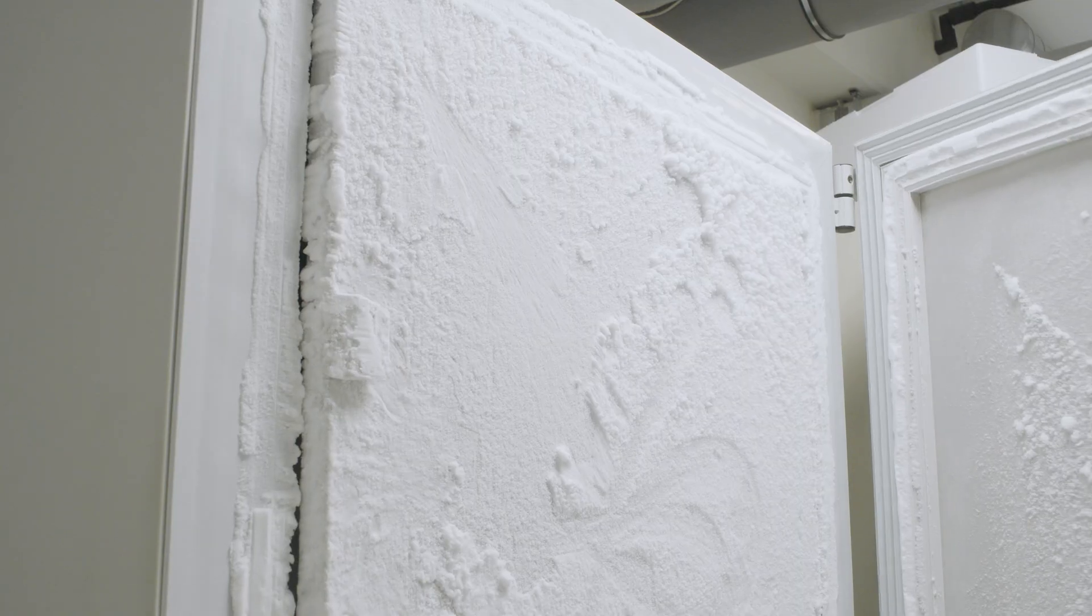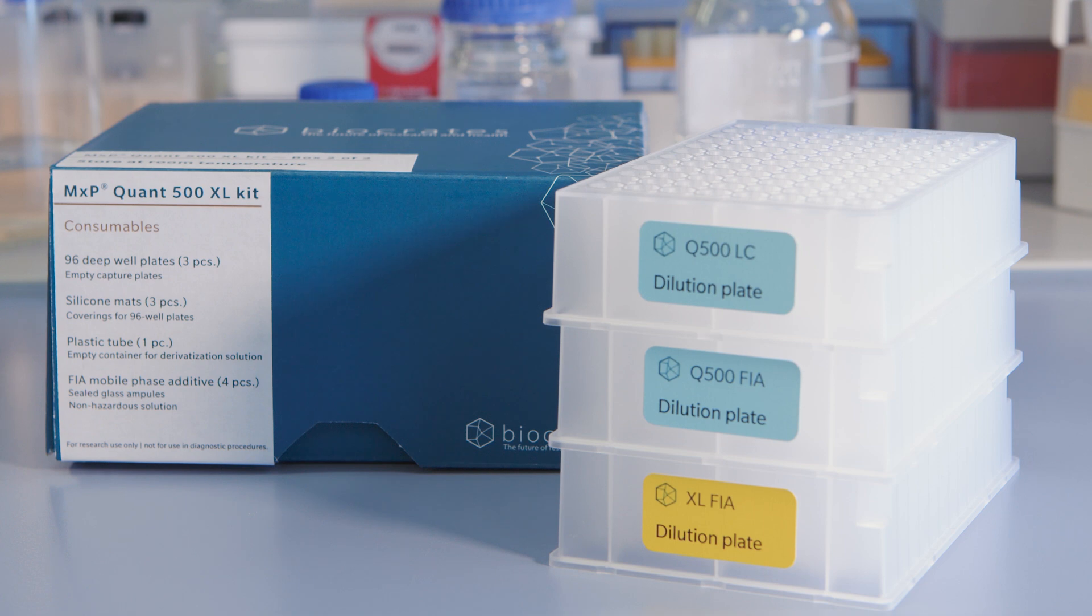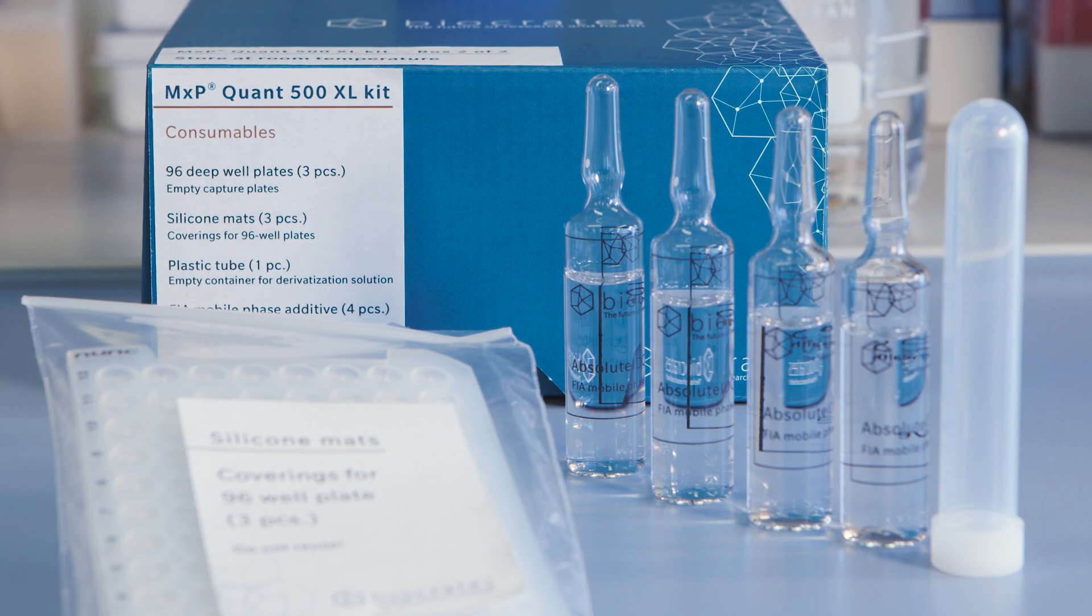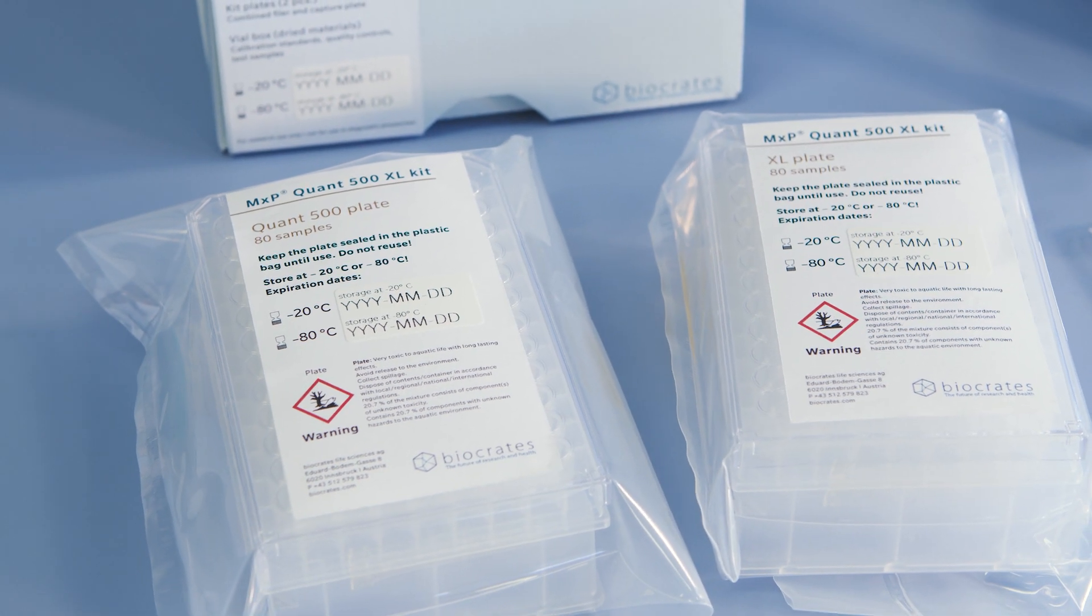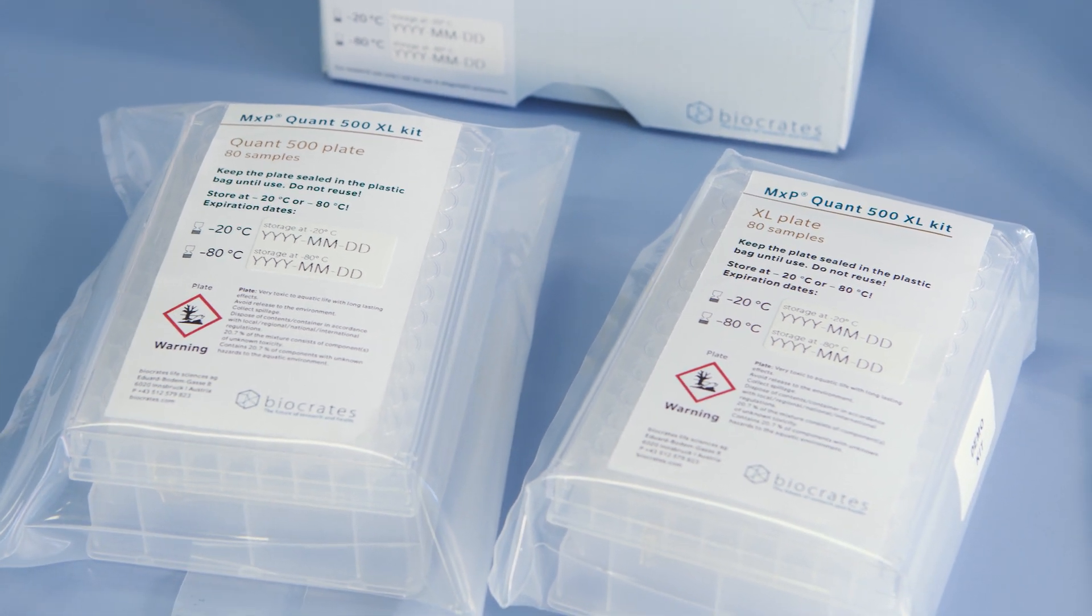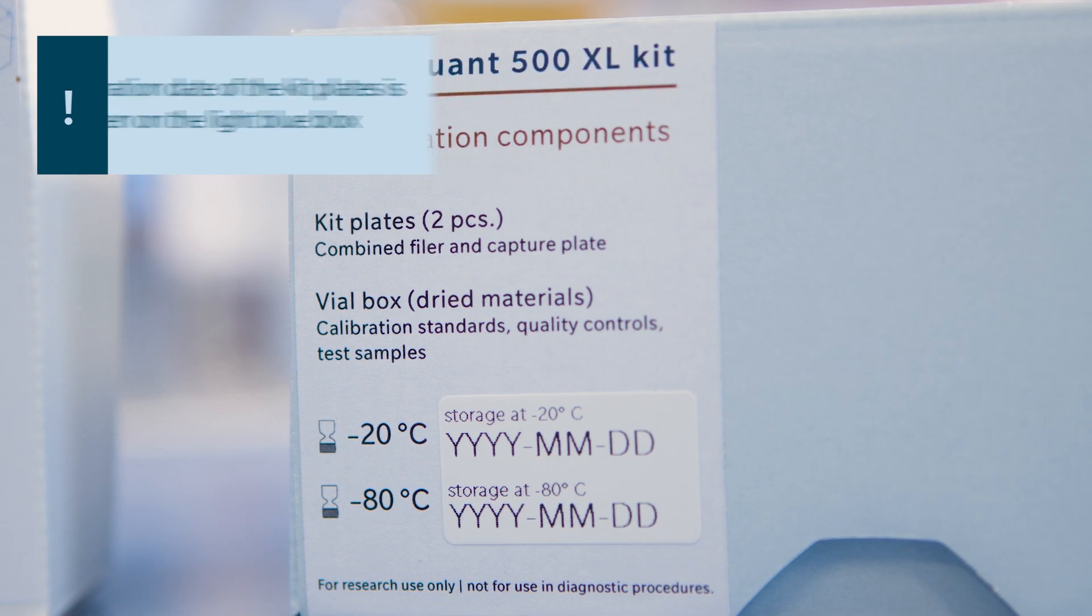Store the light blue box containing the kits and consumables directly at minus 80 degrees Celsius. The dark blue box contains three dilution plates, silicone mats, FIA ampoules, and is stored at room temperature. Biocrates can only guarantee proper kit performance if the plate is stored unopened in its original plastic bag and away from light. Please also check the expiration date of each kit plate which is written on the outside of the light blue box.